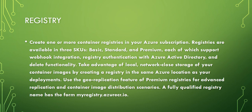You can create one or more container registries in your Azure subscriptions — the prerequisite is that you should have an Azure subscription. Registries are available in three SKU configurations: Basic, Standard, and Premium. Each supports webhook integration, registry authentication with Azure Active Directory, and delete functionality. You can take advantage of local network-close storage of your container images by creating a registry in the same Azure location as your deployment. The geo-replication feature is only available in the Premium registry.